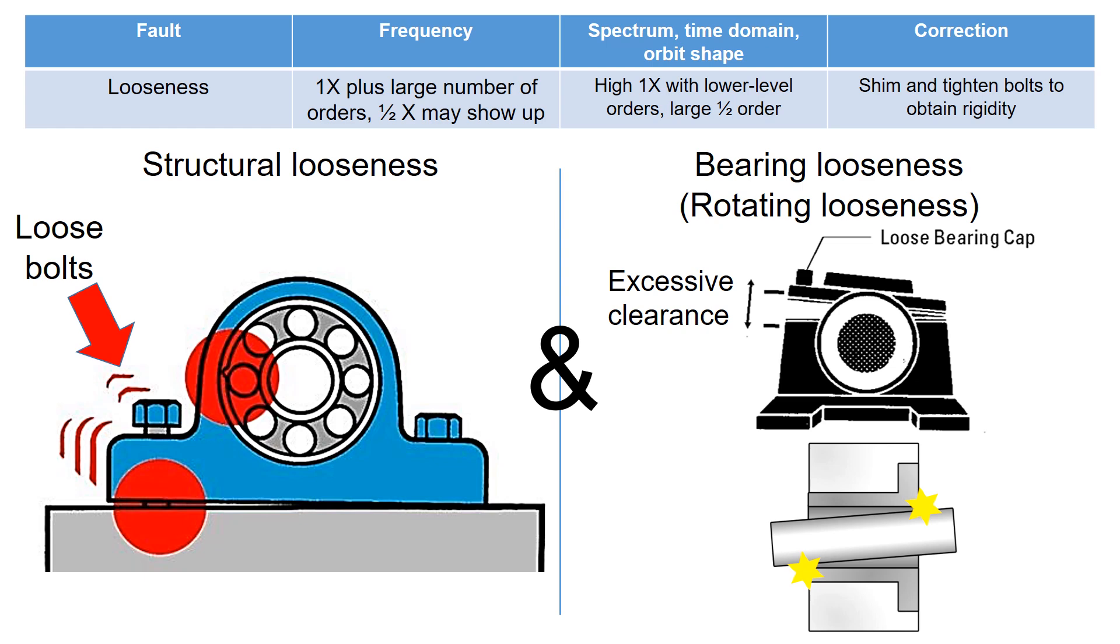There are two primary types of looseness: structural looseness and bearing looseness. Let's look into the structural looseness first.